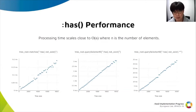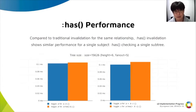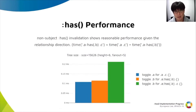It provides reasonable performance. The processing time increases almost in proportion to the number of elements in most cases. Even if we use non-subject HATS for heavy operations like query selector, it scales linearly, and it is the same for more complex relationships that involve multiple subtrees. The HATS invalidation performs similarly to the traditional top-down invalidation when the relationship involves a single subtree. In the case of non-subject HATS, the invalidation time is about twice as long, but it is reasonable considering the direction of the relationship.